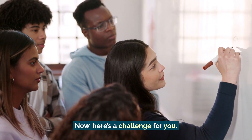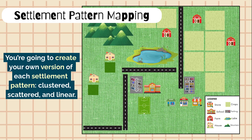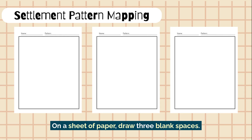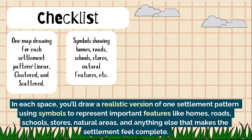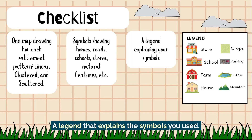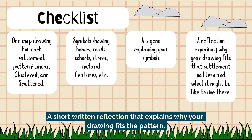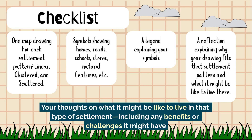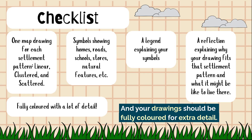Now, here's a challenge for you. You're going to create your own version of each settlement pattern — clustered, scattered, and linear. On a sheet of paper, draw three blank spaces. In each space, draw a realistic version of one settlement pattern using symbols to represent important features like homes, roads, schools, stores, natural areas, and anything else that makes the settlement feel complete. For each drawing, include a legend that explains the symbols you used, a short written reflection explaining why your drawing fits the pattern, your thoughts on what it might be like to live in that type of settlement, including any benefits or challenges it might have. Your drawings should be fully coloured for extra detail.